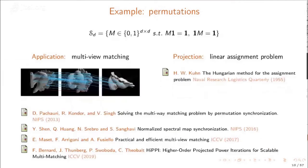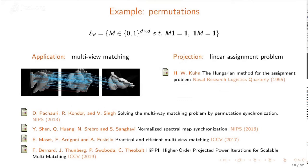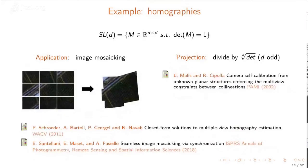Another example is permutation matrices, which are binary matrices such that exactly one entry in each row and column equals one and all other entries are zero. Permutation matrices represent matches between objects — for instance, matches between key points extracted in multiple images — and the projection can be cast as a linear assignment problem. Another example is homographies, identified with matrices with unit determinant, related to image mosaicing, where the projection is done by dividing by the square root of the determinant.